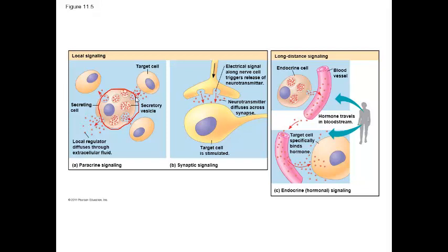Another example of local signaling is synaptic signaling. This takes place in the nervous system where a neuron communicates to its target cell. It releases a ligand, a chemical messenger called a neurotransmitter, and that neurotransmitter is released into a small space called the synapse. So it's only traveling a very short distance.